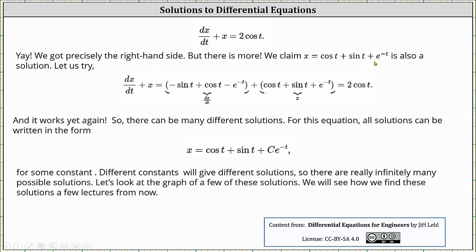Notice that to differentiate e to the power of negative t, we do have to apply the chain rule. And then we have plus x, where x is cosine t plus sine t plus e to the power of negative t. If this is a solution, this sum must equal two cosine t. Notice the exponential terms simplify out because they are opposites, and so are the sine terms, once again leaving us with cosine t plus cosine t, which is two cosine t. And it works yet again.